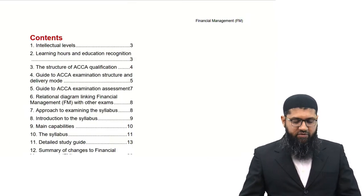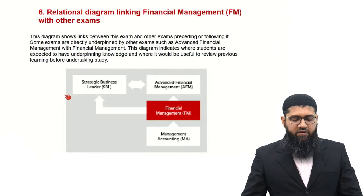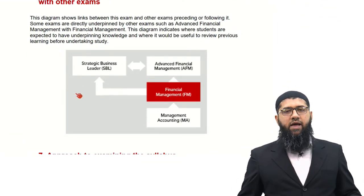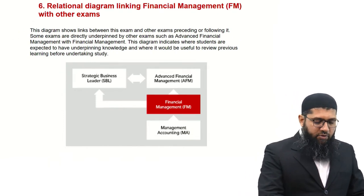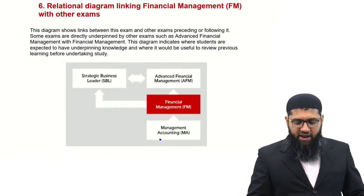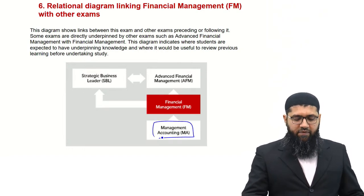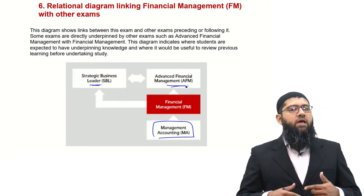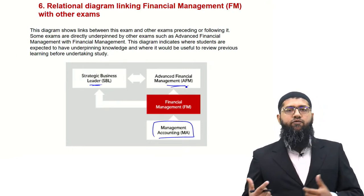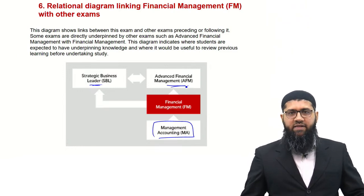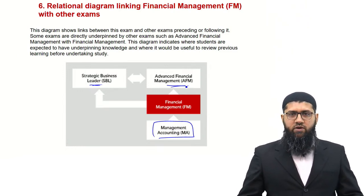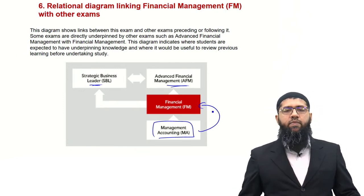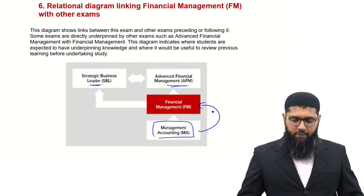What I have opened up in front of me is the syllabus guide. When it comes to the syllabus guide, it's always important to look for the relational diagram of the paper. The relational diagram has a Management Accounting paper at the base, and then there are other papers like SBL and AFM which are going to be relying upon the broad forward knowledge from the Financial Management examination.